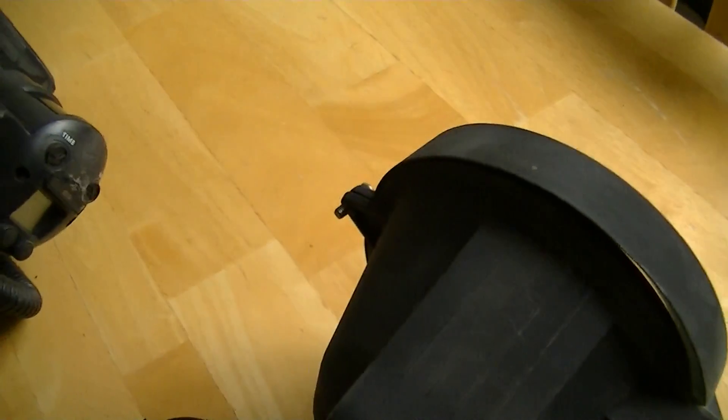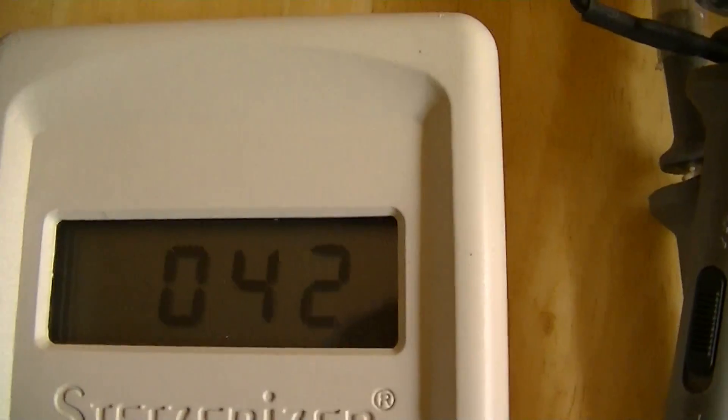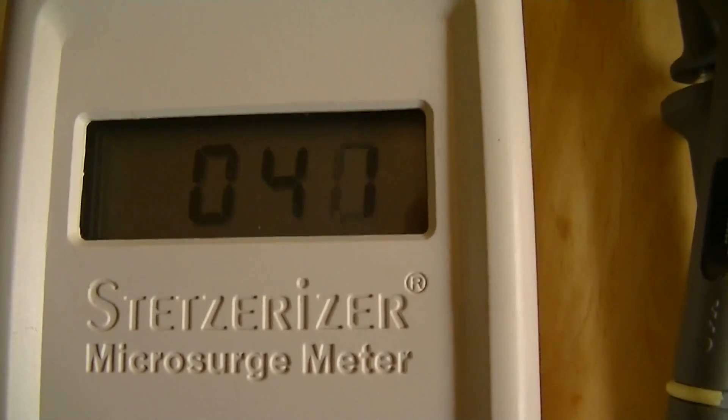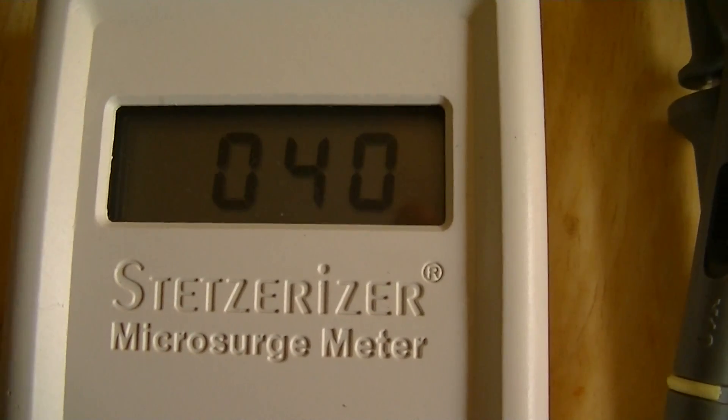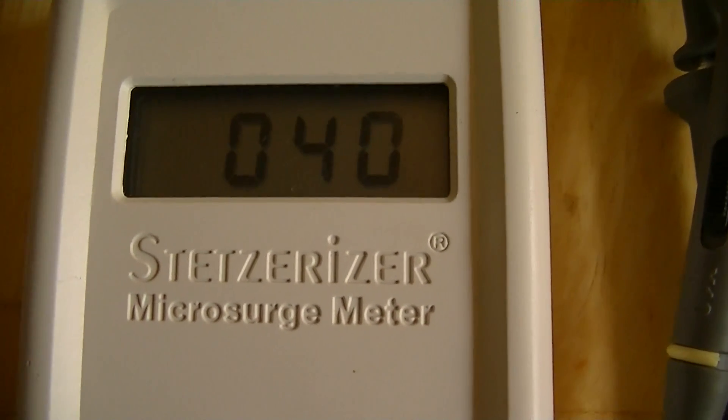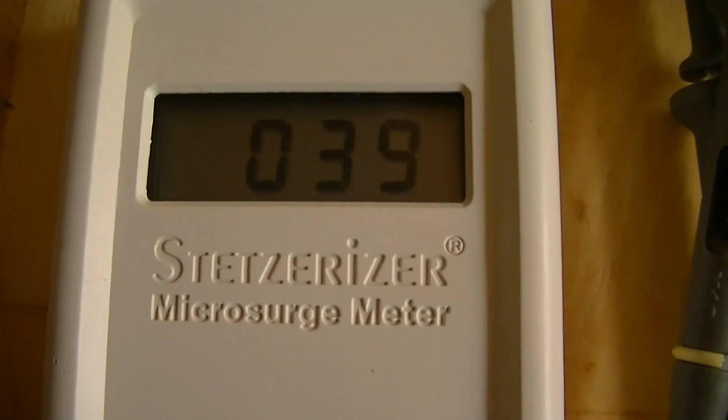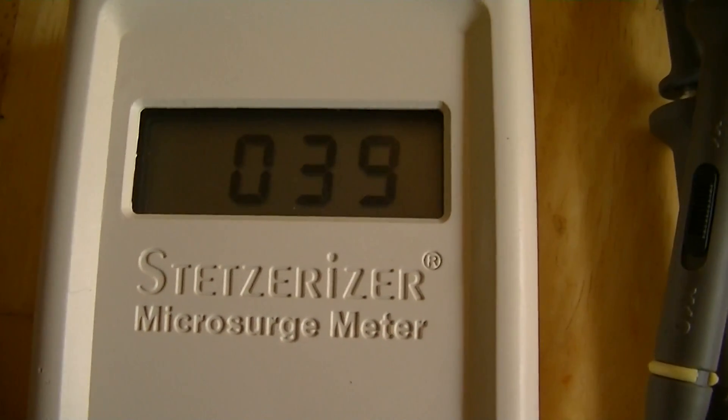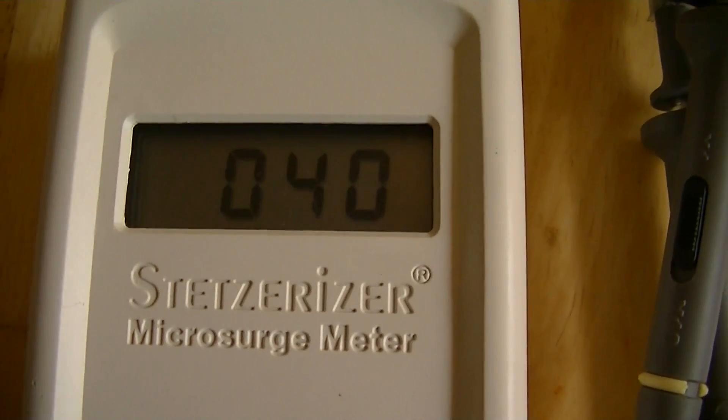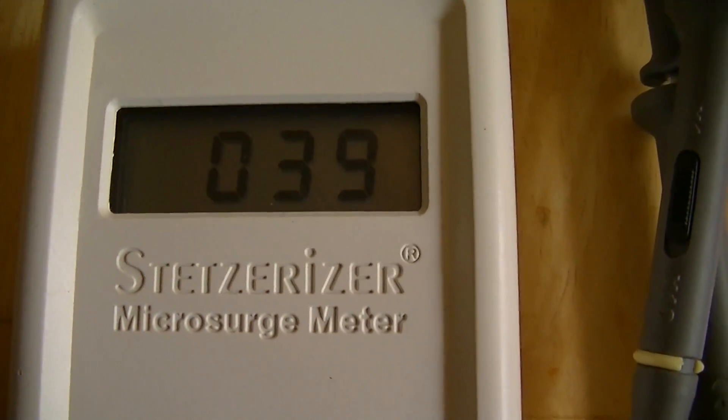Our lights have just switched off, so I'm going to switch them back on again. Our lights are back on, capacitor is plugged in, and you can see the effect that plugging in the capacitor has had on this meter. We're actually now below what the manufacturer states is what you want. The manufacturer says anything above 50 is a problem, so we're now down at 40, which the manufacturer would say is acceptable.